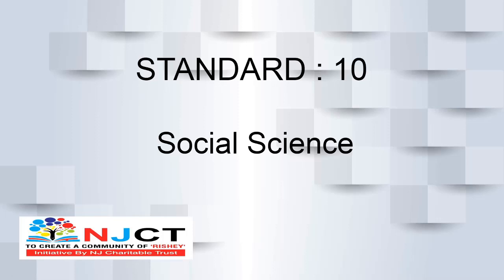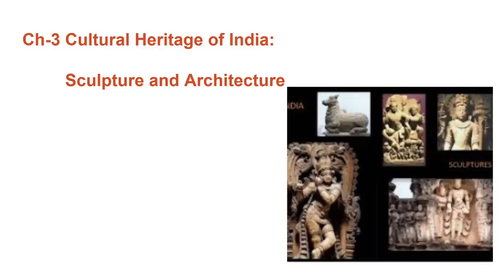Hello friends, welcome to NJCT. We are learning Social Science of 10th standard and we are talking about the third chapter: Cultural Heritage of India — sculpture and architecture. In the previous video we talked about Dravid style as well as Gupta style.